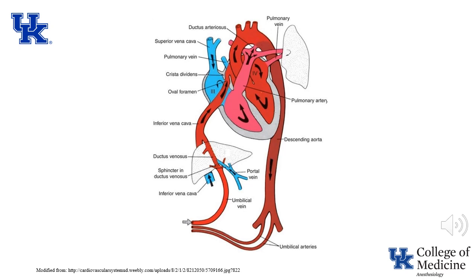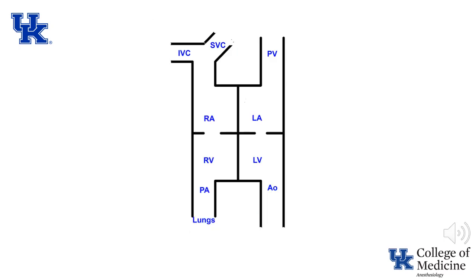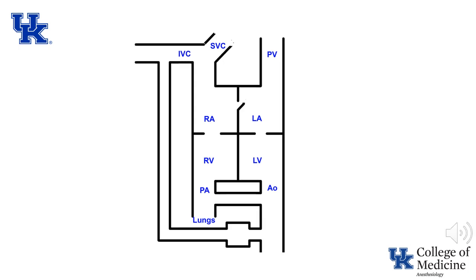This illustration demonstrates normal fetal circulation, but I'm going to call on my rudimentary artistic abilities in an effort to make it clearer. This is a schematic representation of adult circulation. Hopefully the cardiac chambers and great vessels need no explanation. In contrast, this is a schematic of the normal fetal circulation.